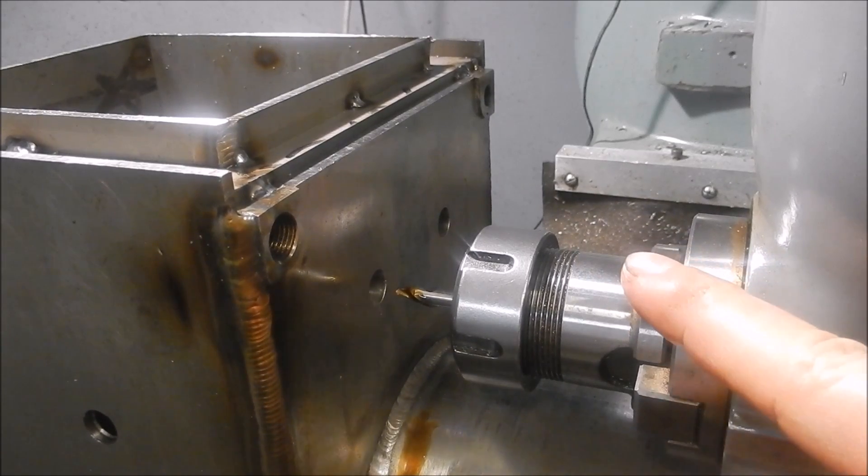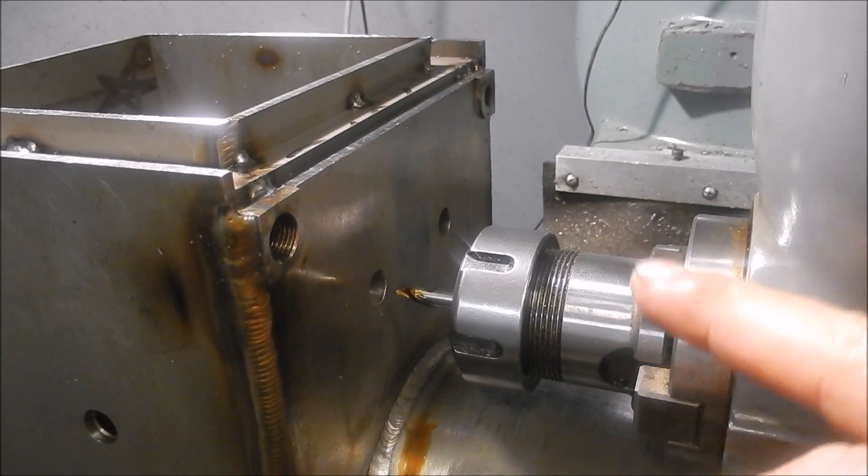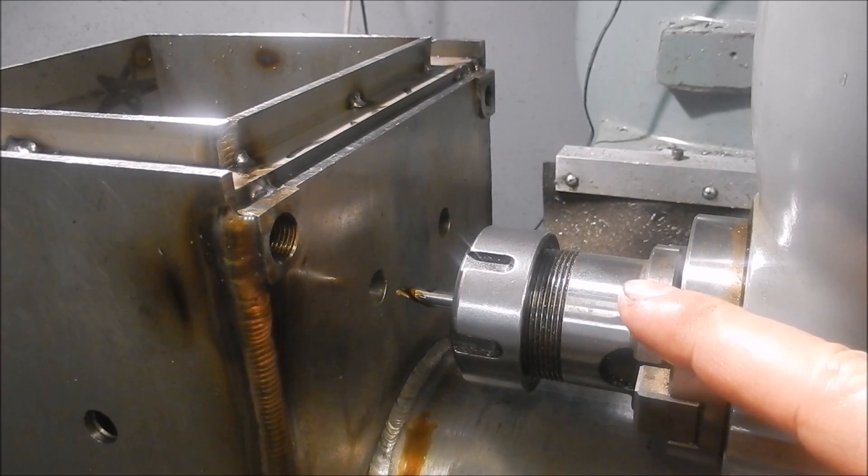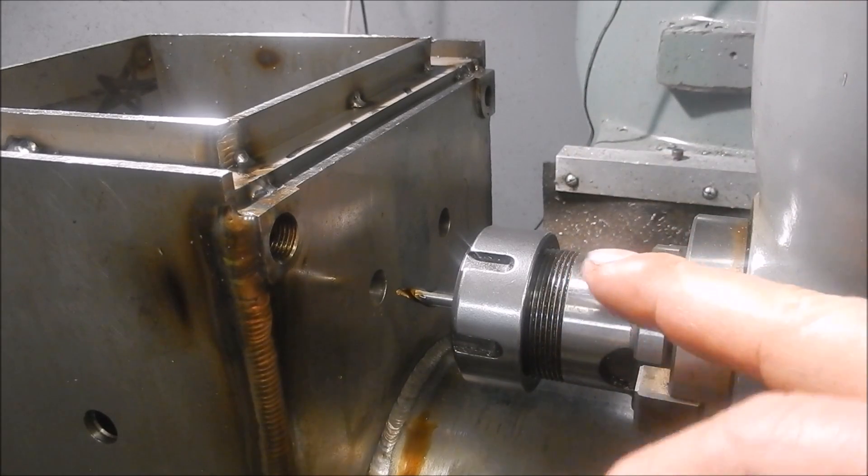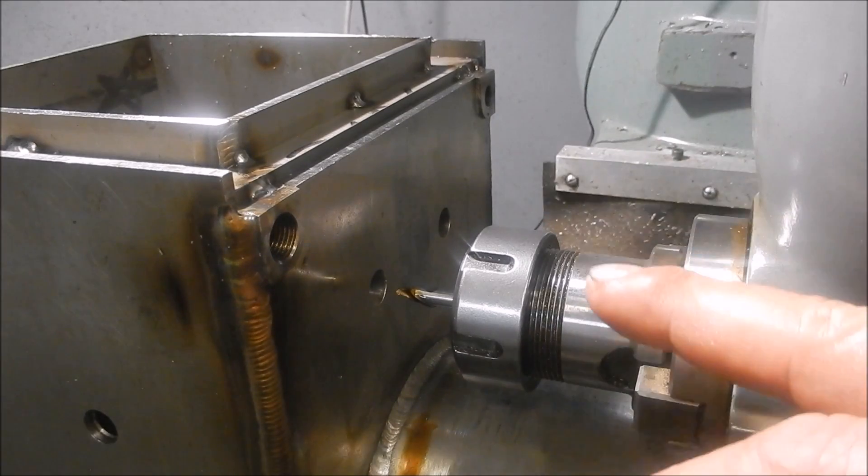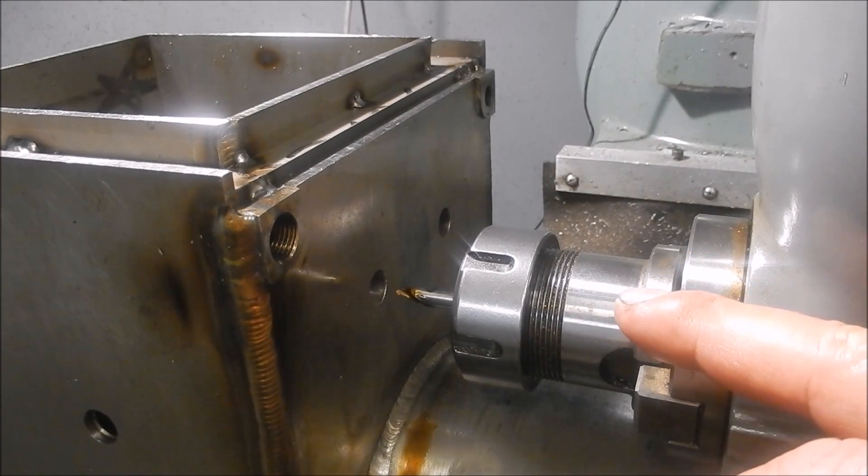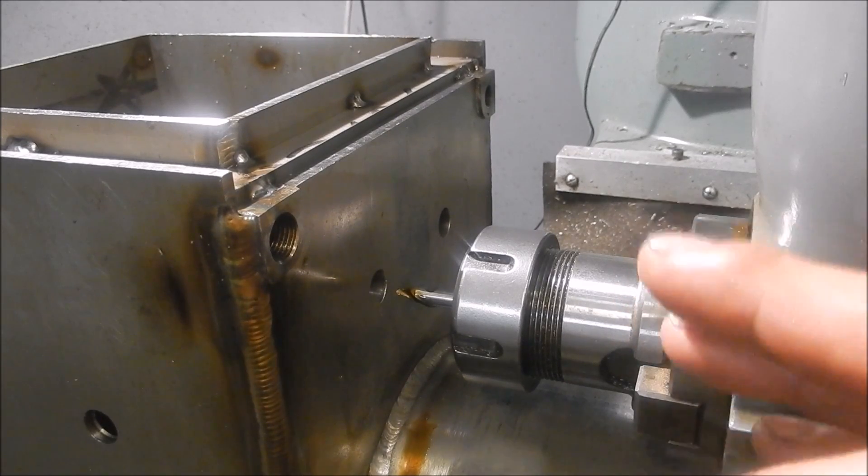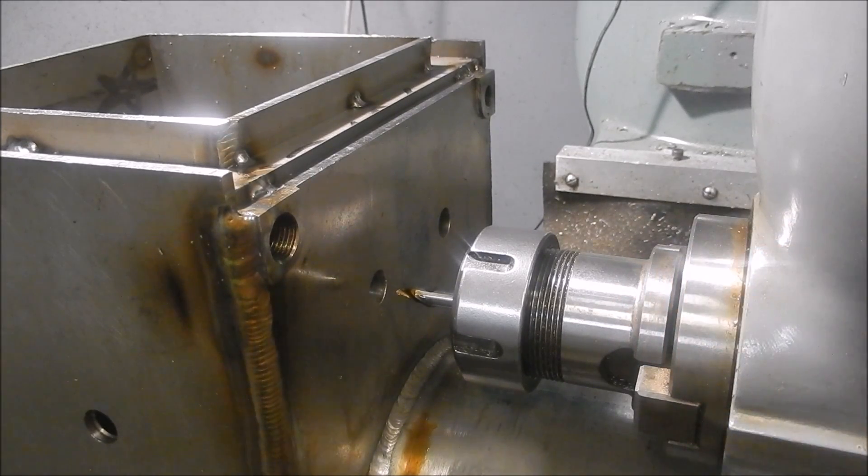One of the problems with using the horizontal head is that I don't have the same fine control and feel like I do using the quill. I've got to use the table to drive this in. So being a lot heavier, you don't have that feel. Particularly trying to machine this duplex stainless. But I'll just take it very easy. Just got to be very careful that I don't allow it to rub.